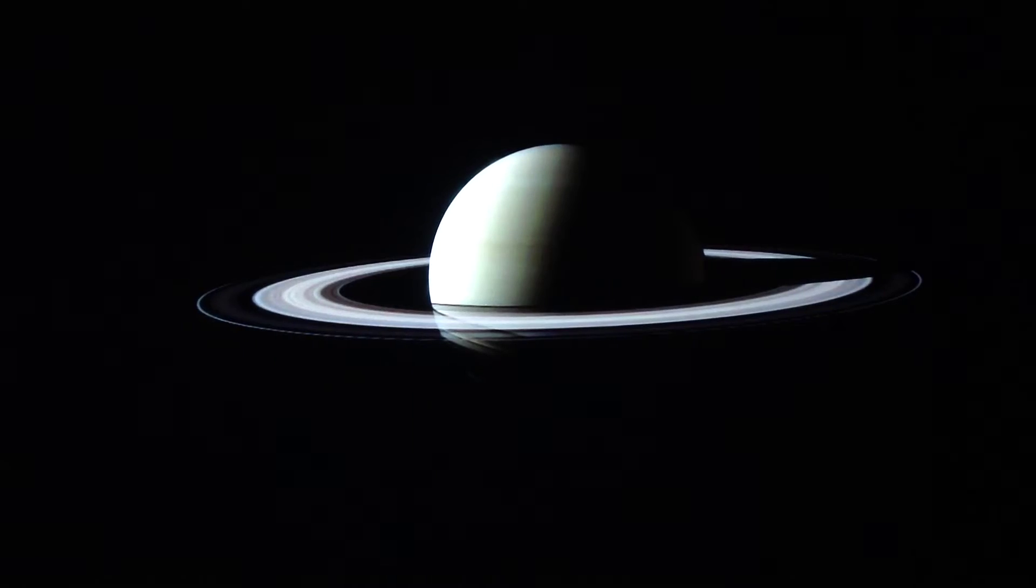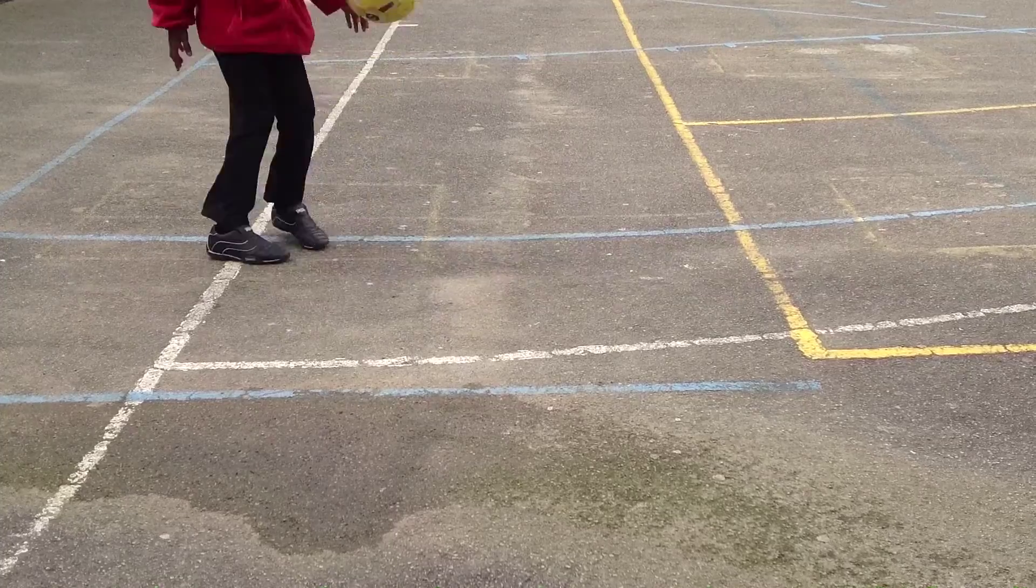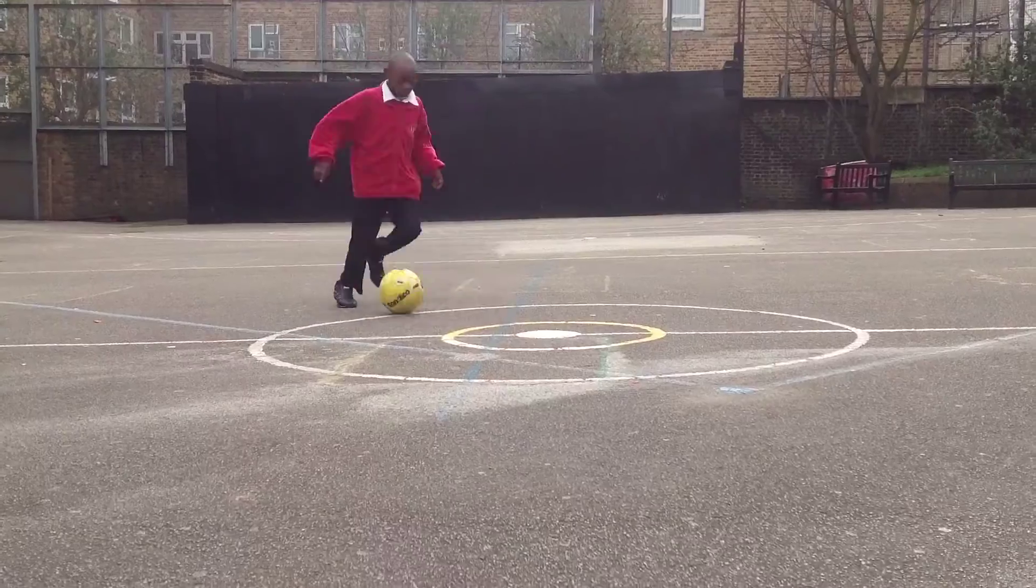Saturn! Saturn has the most impressive rings. They are made up of billions of pieces of ice and rocks. They are over 100,000 miles wide but only as thick as a football field. The amount of hydrogen makes Saturn so light it could float in a giant bathtub.